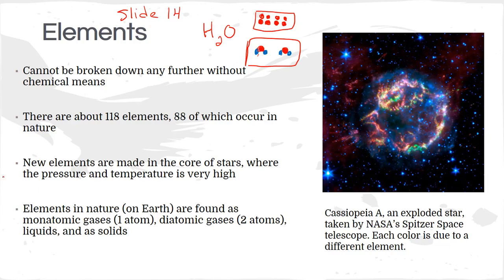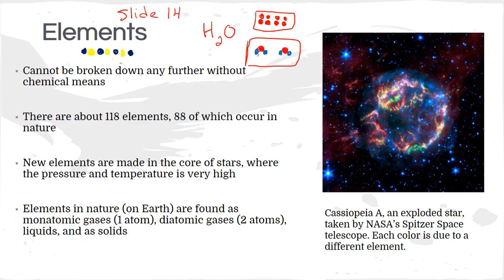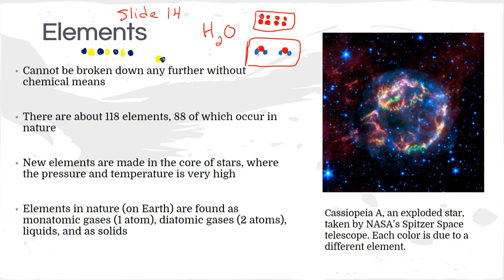These are pure substances because the only particles present are identical. On the other hand, if I have two different elements in one space, we call that a mixture. For example, the blue could represent carbon and the yellow sulfur. A mixture has two different elements that are not bonded together — they're separate particles. A compound requires them drawn overlapping, close together. Compounds are pure whereas mixtures aren't.